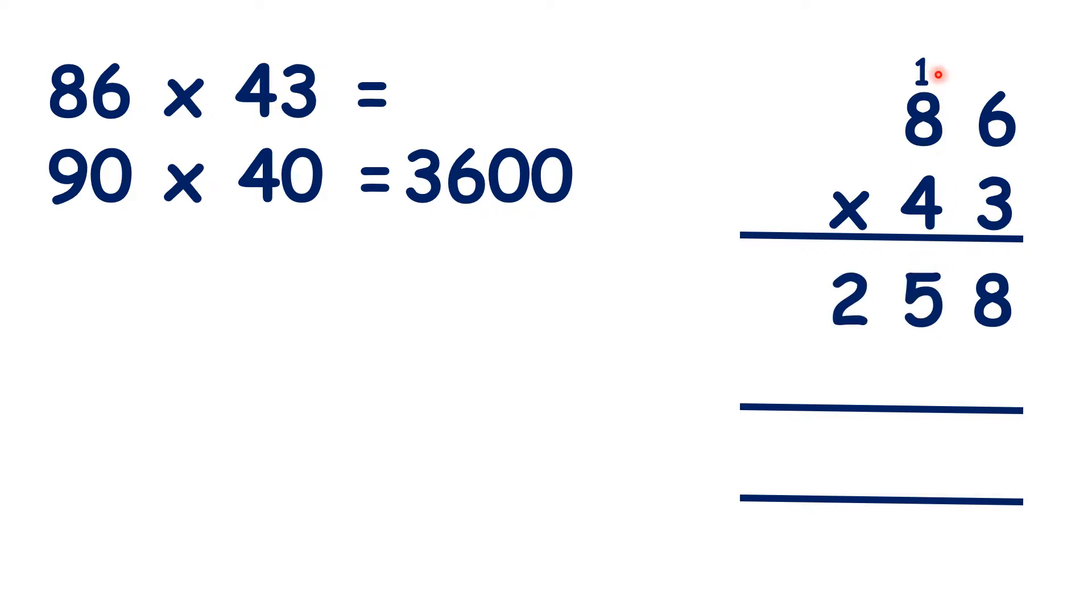Now, we can cross out our working so we don't get mixed up, and on this second line, because we're really multiplying by 4 tens rather than by 4, we need a zero in our units column. Now, 6 times 4 is 24, and 8 times 4 is 32, plus 2 is 34.